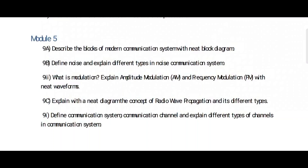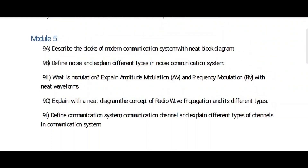Let's go into Module 5. First: 'Describe the blocks of a modern communication system with a neat block diagram.' This is a very important question — it's a fixed question, you can definitely get marks. Second: 'Define noise and explain the different types of noise in a communication system.' This is also very important.